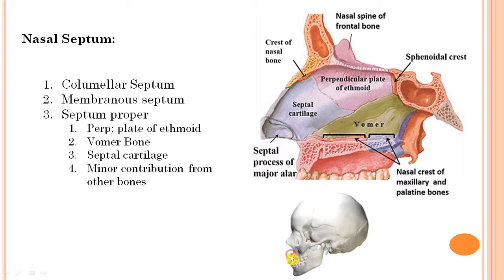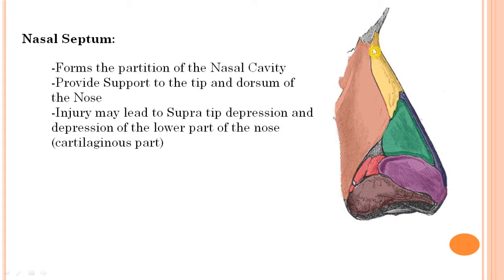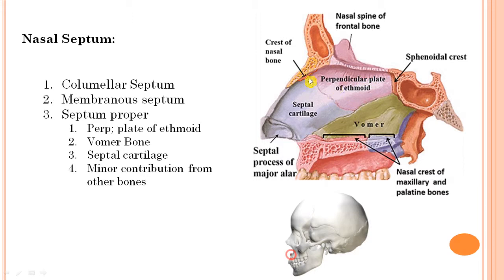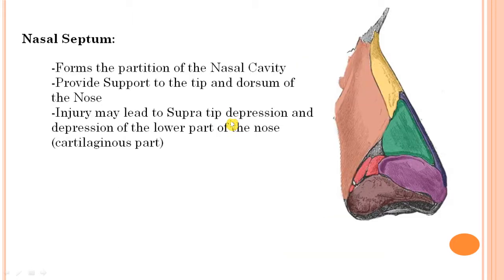There is also some minor contribution from other bones forming the nasal septum. The two nasal bones form the upper bony dorsum of the nose, and the septal cartilage goes deep inside. A portion of the nasal bone crest, posteriorly the rostrum of the sphenoid bone, and small crests of the palatine bone and the maxilla also take part in the formation of the nasal septum.